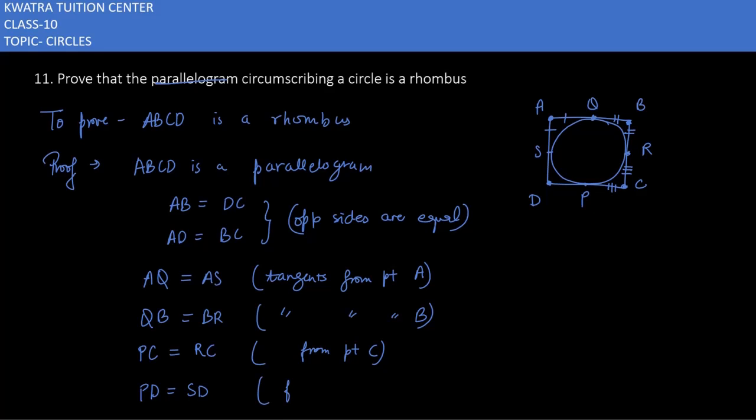Now what you have to do is you have to add the left hand side and the right hand side. From that we'll be able to prove that all the sides are equal. These two are already here, but we have to look for one more side, then only we can prove it. So let's add.